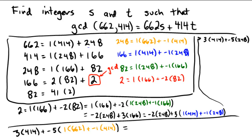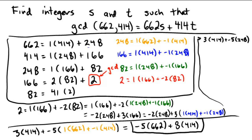Therefore, we're now at a stage where we have negative 5 times 1, giving us negative 5 copies of 662. Then negative 5 and negative 1 distributed gives 5, added to the 3 we had before, giving 8 copies of 414. So the final answer is that we have used the Euclidean algorithm to write the GCD of 662 and 414, which is 2, as a linear combination: 2 equals negative 5 copies of 662 plus 8 copies of 414.